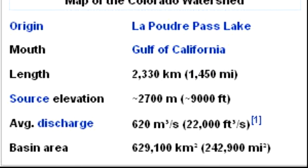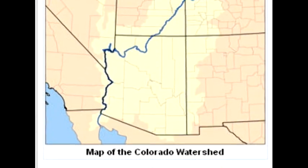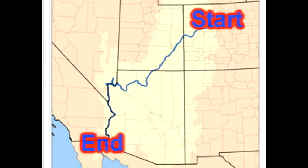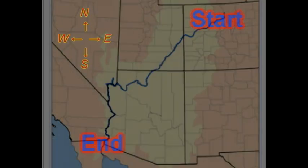First off, let's go look it up. The Colorado River begins at La Poudre Pass Lake, and it ends in the Gulf of California. Looking at a map where north is up and south is down, and isolating the left and right component of motion of the river, the river flows from right to left, or east to west.